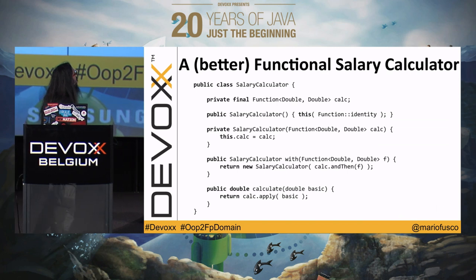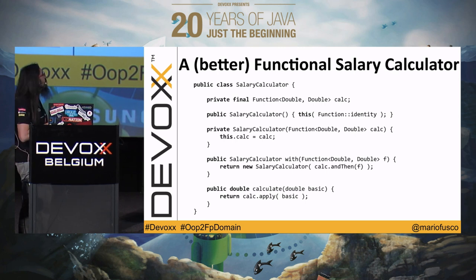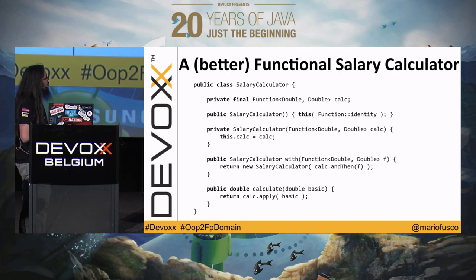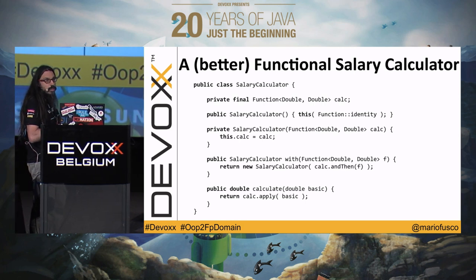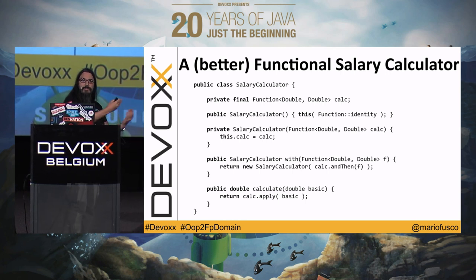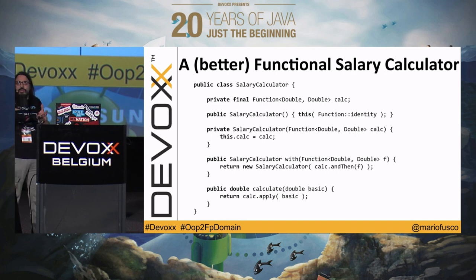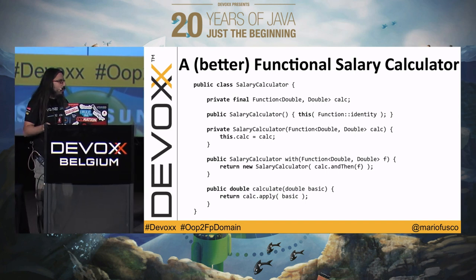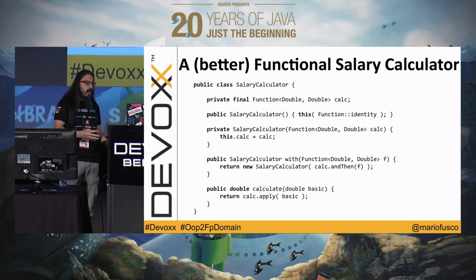A better version of the salary calculator is totally immutable. Now I have a function that does the calculation, and every time I call with(), I create a new salary calculator by passing it another function that is the combination of the original function with the new function being passed. I start with the identity function, and every time the user calls with(), I combine the current function with the new one. When I do the calculation, I just apply it.